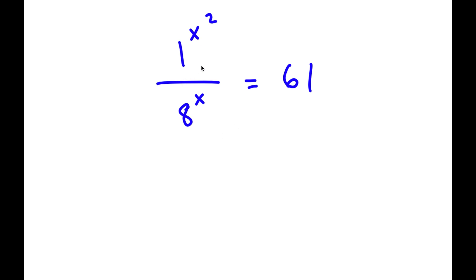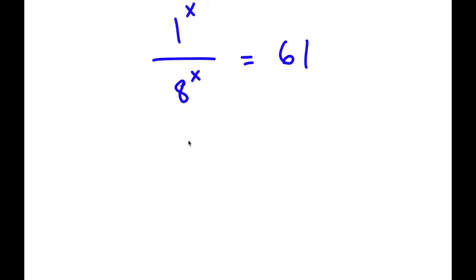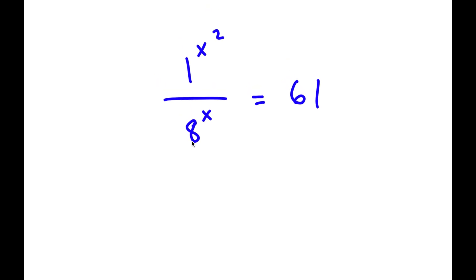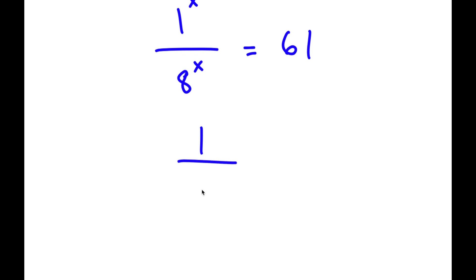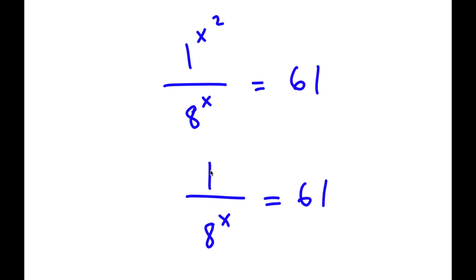In this problem, I have 1 to the power of x squared over 8 to the power of x, equal to 61. The key observation is that 1 to the power of any number is simply 1, so whatever x is, 1 to the power of x squared equals 1. I can rewrite this as 1 over 8 to the power of x equals 61.